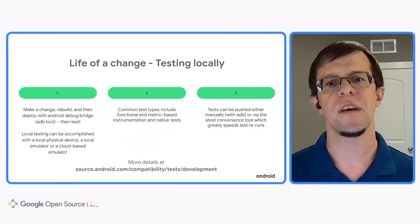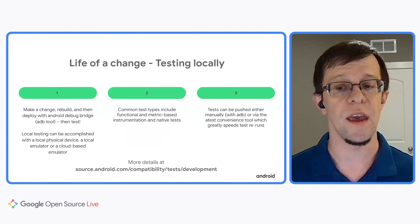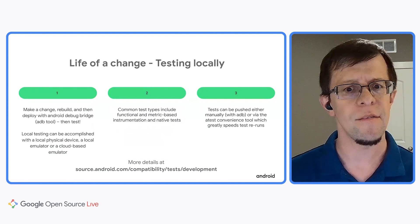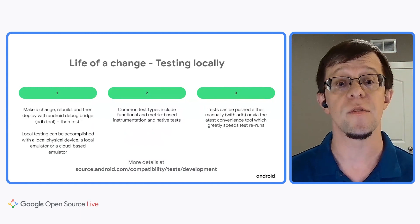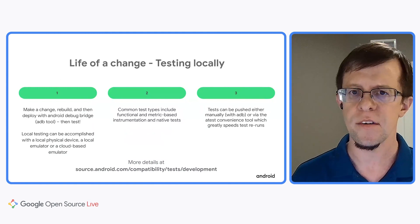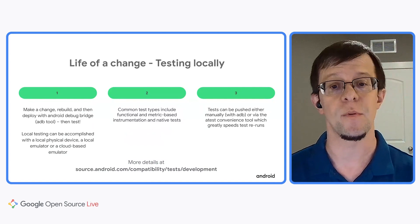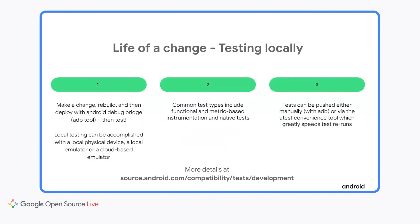So you've synced the source and of course you made your change, but now we need to test. First, you can test your change locally using your own device with the Android debugger or ADB bridge, but if you don't have a local device available, you can use a local emulator or a cloud-based virtual device, and that's covered in the Codelab. We're going to talk in depth about the cloud virtual device in the next presentation. Common types of tests include functional tests, possibly more commonly known as unit tests, and also metric-based instrumentation and native tests. Now you can either push tests to your device directly with ADB, or you can use ATest, which greatly simplifies rerunning tests between code iterations. You can find more info about how to do testing at source.android.com compatibility test development.